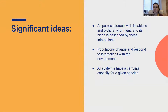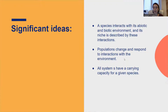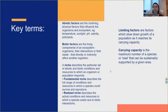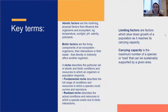Members of an ecosystem or community interact, and they change and evolve because of changes in the environment. The last significant idea: all systems have a carrying capacity for a given species. Carrying capacity is the maximum number of species or load that can be sustainably supported by a given area. In every ecosystem, members cannot reproduce infinitely because there are many limiting factors — biotic or abiotic factors — that do not allow them to do so.